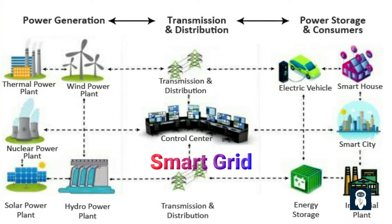With the power of real-time analytics and two-way communication, smart grids deliver faster response times to power outages and equipment failures. Grid operators can detect and isolate issues more efficiently, minimizing disruptions and reducing downtime for consumers.